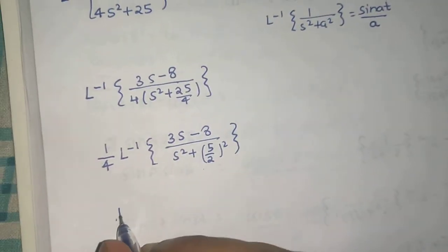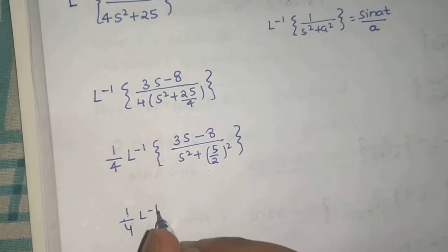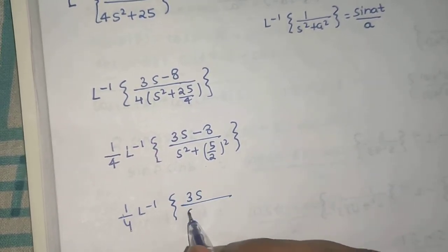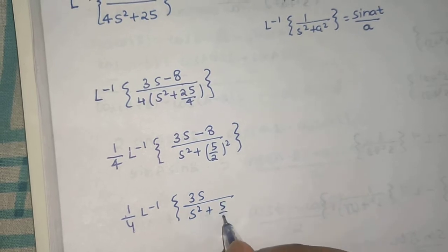Now again we can separate this and write this as 3s divided by S square plus 5 by 2 whole square.